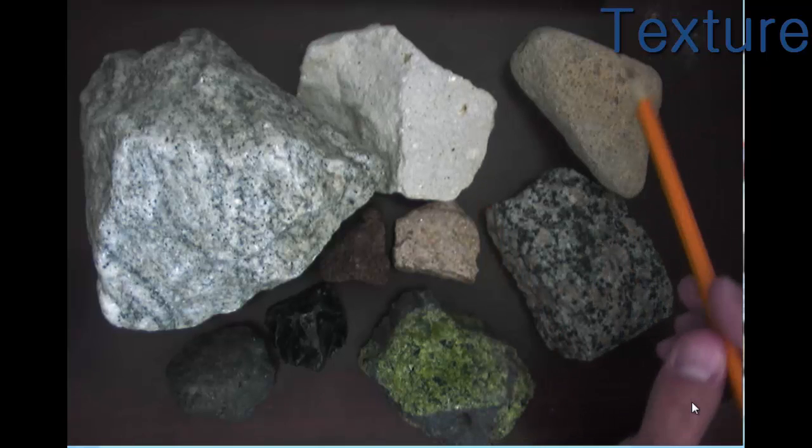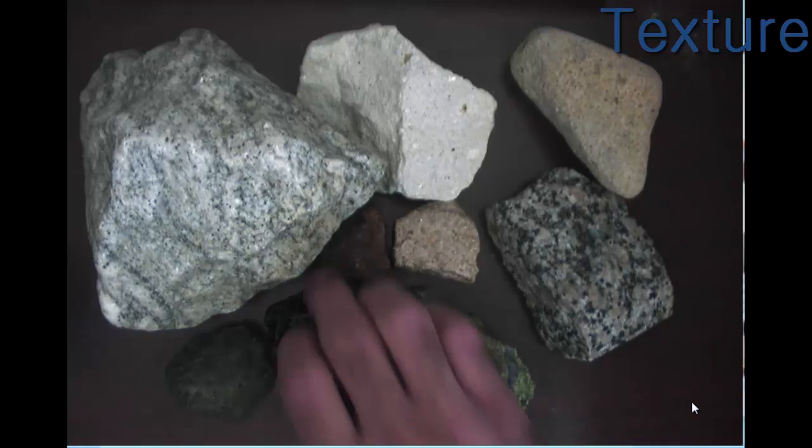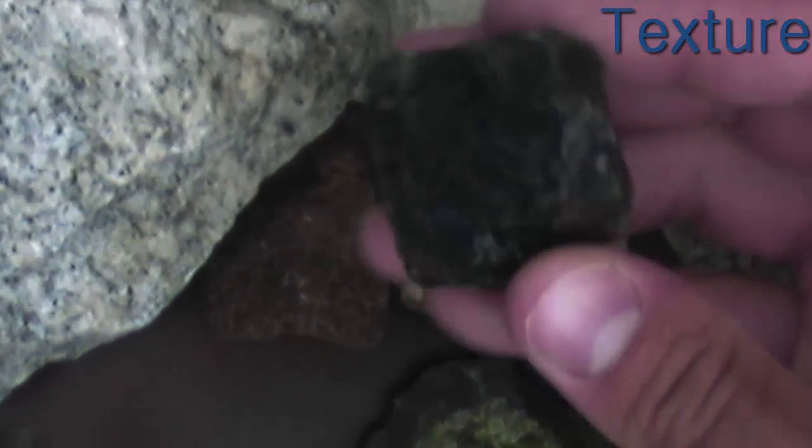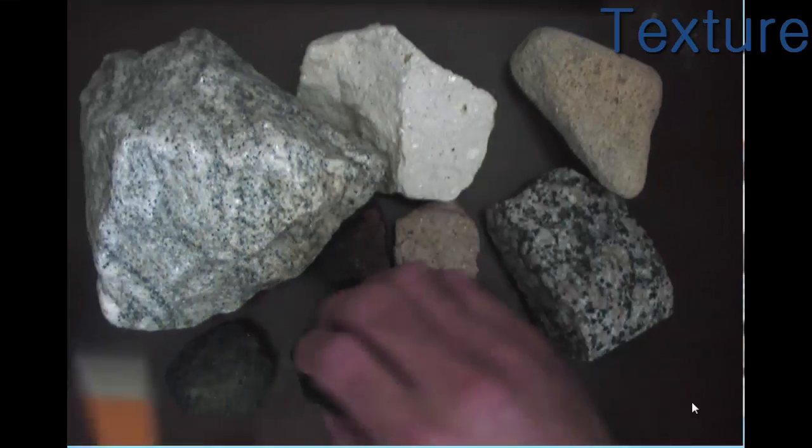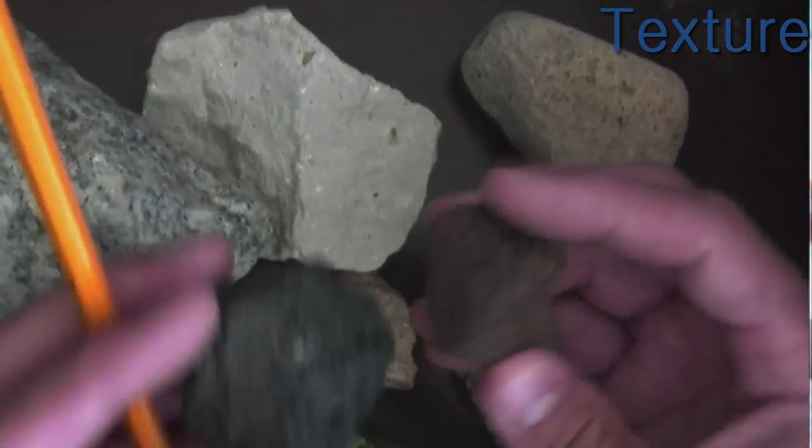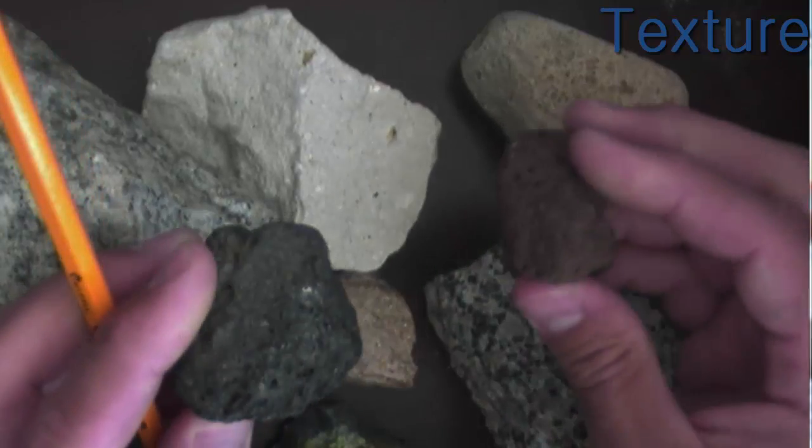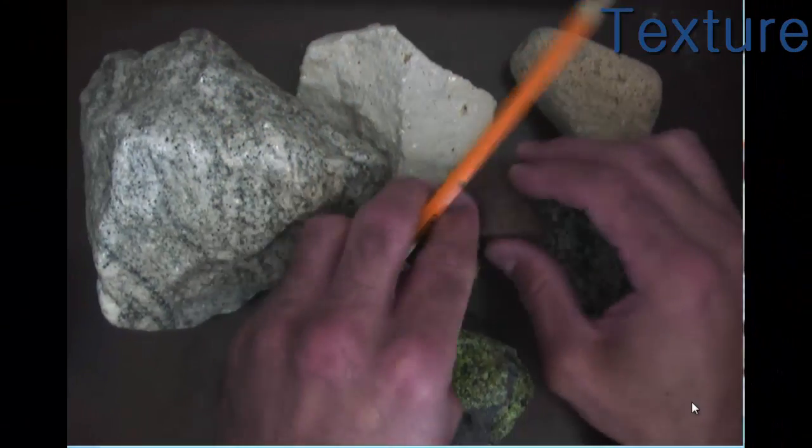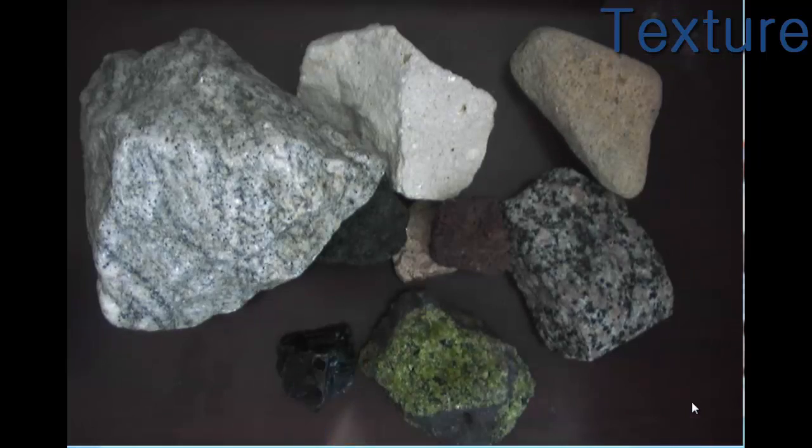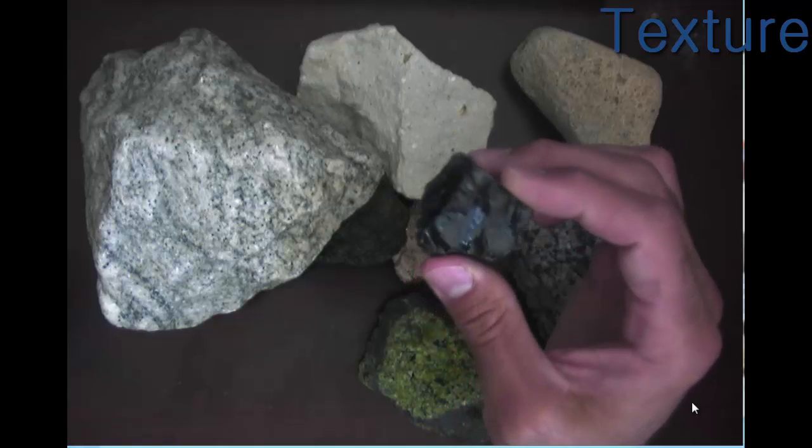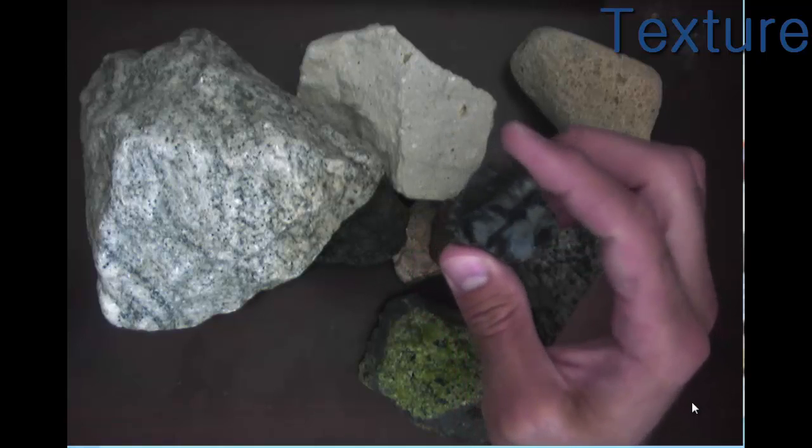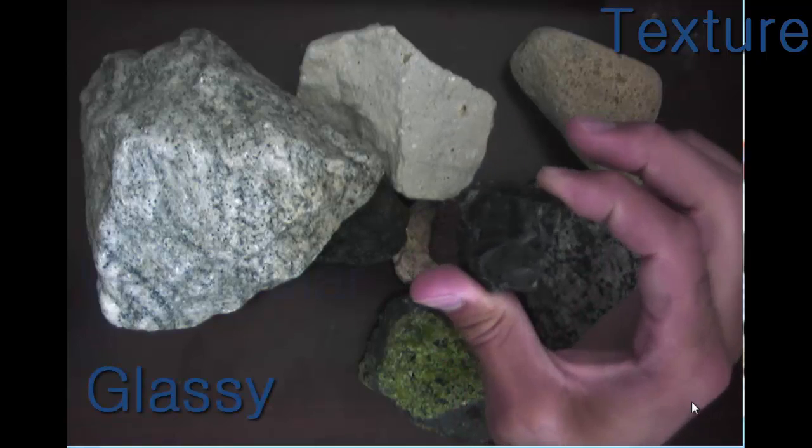And then we move into the ones that are non-crystalline. Let's look at these non-crystalline. We've got a couple different samples here. We got one here that kind of looks like a broken piece of black glass and then some others that kind of look like sponges. All right, when you have a texture where you can't see any crystals, not even with a hand lens, these are known as either glassy or vesicular.